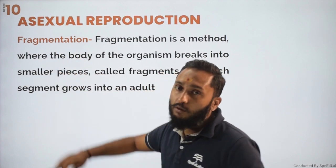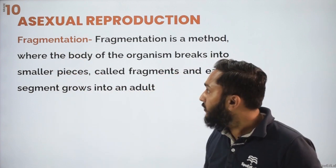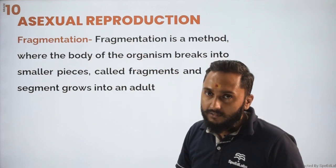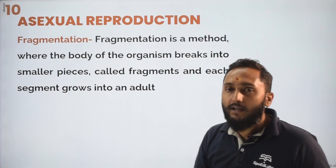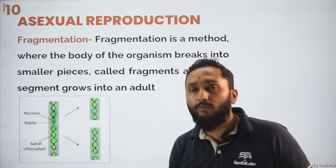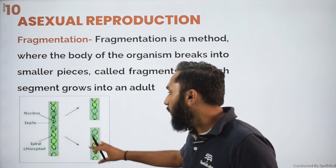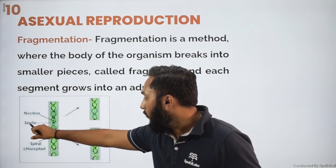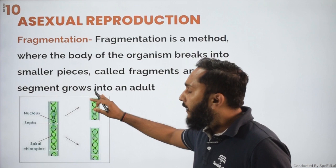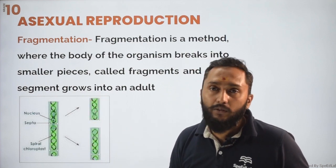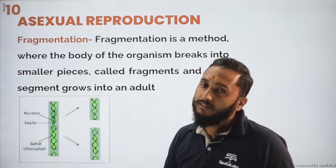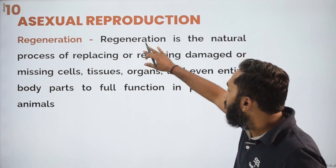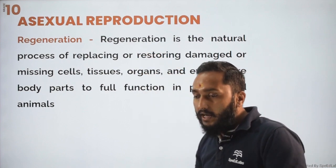The next type of asexual reproduction is fragmentation. In fragmentation, a single organism divides into some pieces — fragments — and each fragment develops into a new individual. You can see this in the case of Spirogyra: a single organism divides from a specific site at the septa, and each fragment develops into a new individual. This is fragmentation, a kind of asexual reproduction.